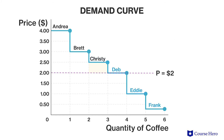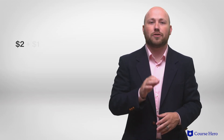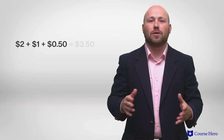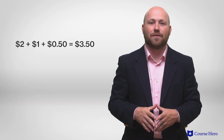Deb, Eddie, and Frank do not participate in this market because their maximum willingness to pay is less than the market price, so they are not included in the calculation of consumer surplus. Adding up the area of each rectangle gives us total consumer surplus: $2 plus $1 plus 50 cents, for a total of $3.50.